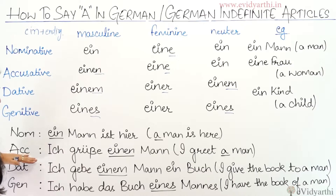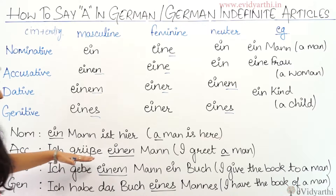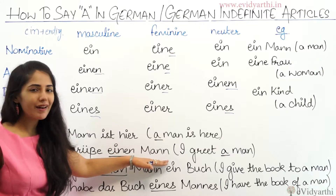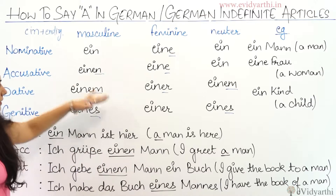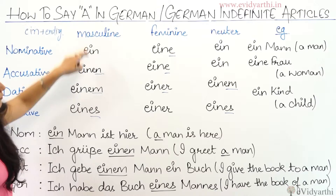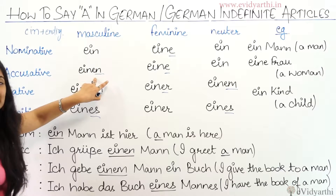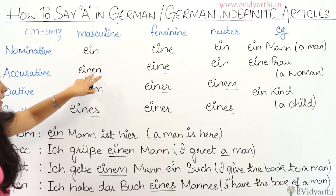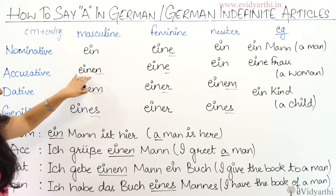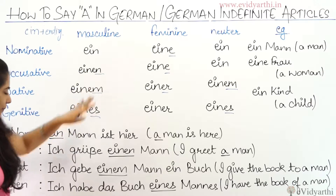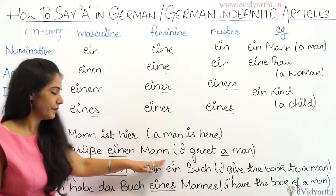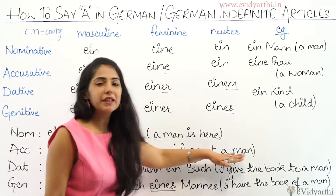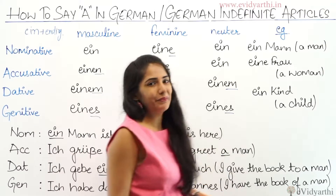Now accusative: 'Ich grüße einen Mann.' Why the 'en' ending here? Because for accusative masculine there is an ending 'EN'. So you add this ending to 'ein', making it 'einen Mann'. This means 'I greet a man'.